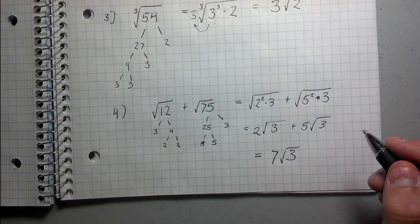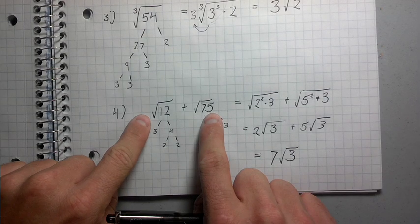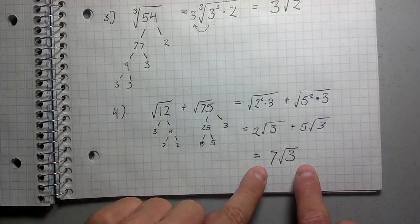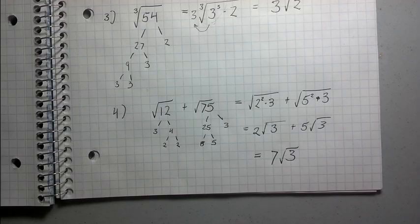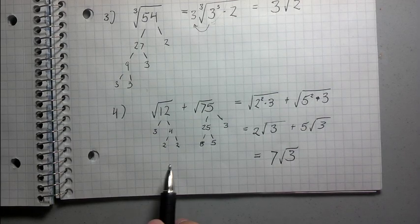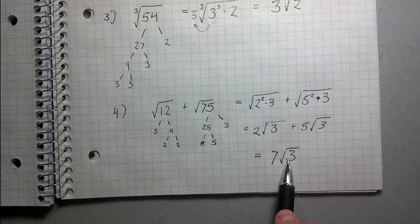So there you go. So what that means is that root 12 plus root 75 is exactly equal to 7 root 3. You can, if you don't believe me, you can try it on your calculator, but I can assure you that, assuming we did all of our math right, then that has to be the answer.